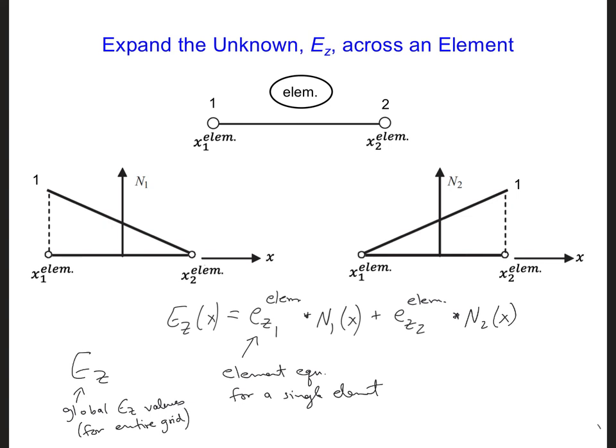We can abbreviate this expansion that we came up with for Ez. We can abbreviate it using a summation. So Ez of x, we can write this for a summation from j equals 1 to 2, because in this case there's only two nodes for the element.